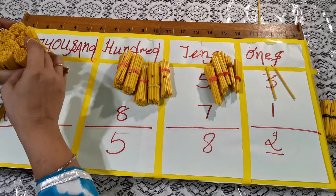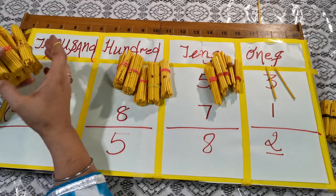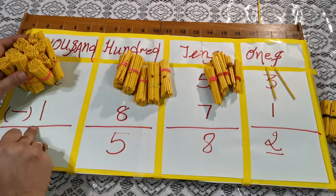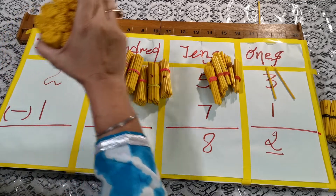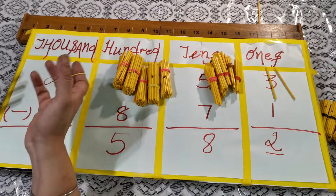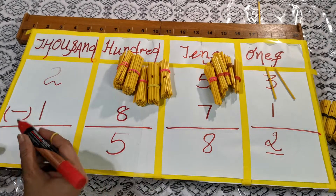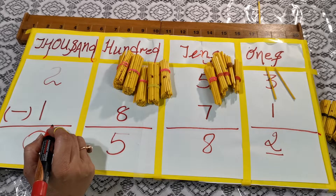Now only one bundle of thousands is left, and thousands has to give this bundle away to the other number. After giving it away, thousands is left with nothing. So we place zero at the thousands place. The final answer is 0582, which is 582.